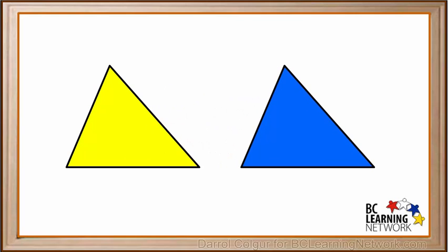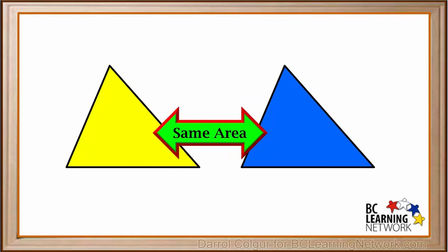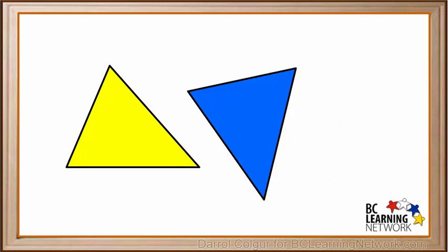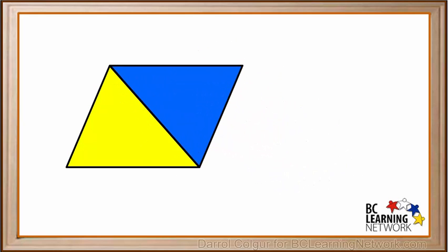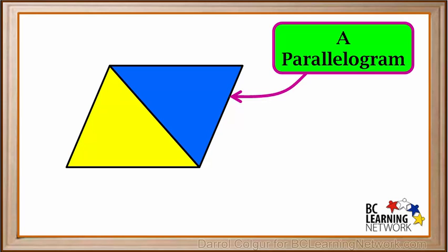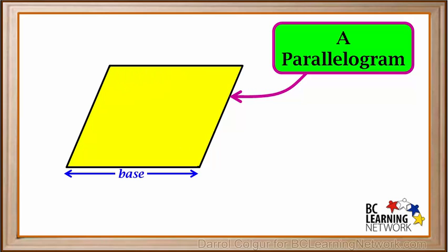We'll move the blue one beside it. Because these are exact copies of each other, they have exactly the same area. Now we'll rotate the blue one and move it beside the yellow one like this. Combining these two triangles gives us a parallelogram. We'll show the base, which is the bottom, and the height, which is a line drawn from the bottom to the top, perpendicular to the base.